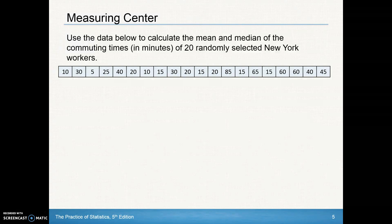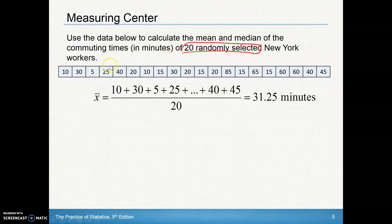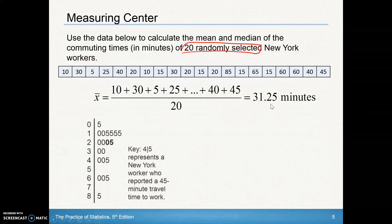Here's an example with data about 20 randomly selected New York workers and their commute times. To find the mean, add them all up and divide by 20. To find the median, order the list using a stem and leaf plot. The first scores are 5, 10, 10, 15, 15, 15, 15, 15, 20, 20, and so on, all the way down to 85.